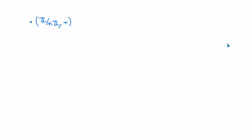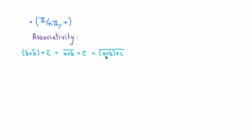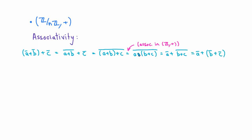Next, let's determine what other properties this binary operation has. First, let's check associativity. Taking three residue classes ā, b̄, and c̄, and adding ā and b̄ first, we get (a+b)̄ + c̄ = (a+b+c)̄. Because addition of integers is associative, we can move the parentheses and write this as ā + (b+c)̄ = ā + (b̄+c̄). So addition on residue classes modulo n is associative, following easily from the definition together with associativity of integer addition.